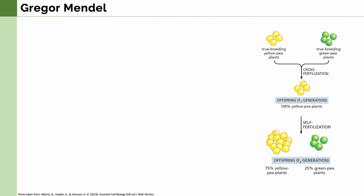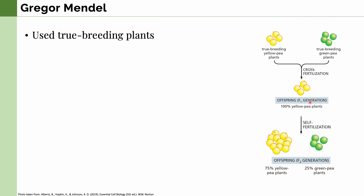The first person to change our viewpoints on genetics was Gregor Mendel. He used true-breeding plants, which always produced the same types of offspring when cross-bred. He used pea plants — true-breeding yellow and true-breeding green — and cross-fertilized them. As a result, the first filial generation, or F1 generation, produced yellow pea plants.